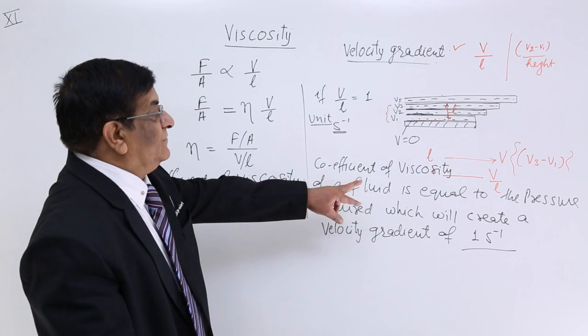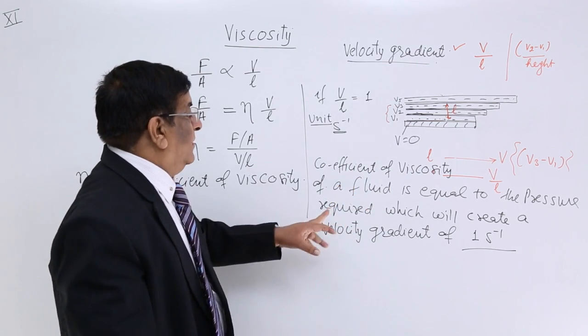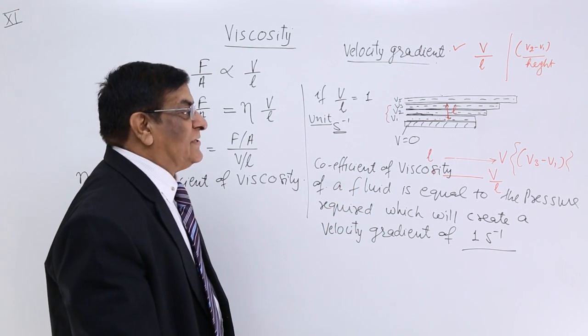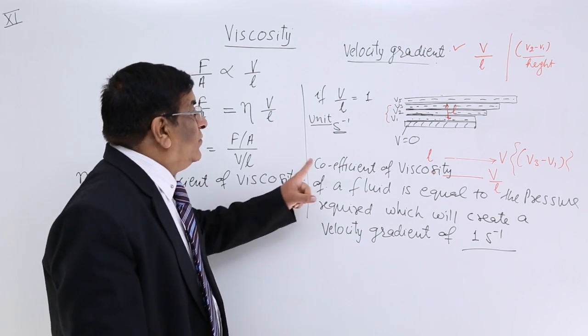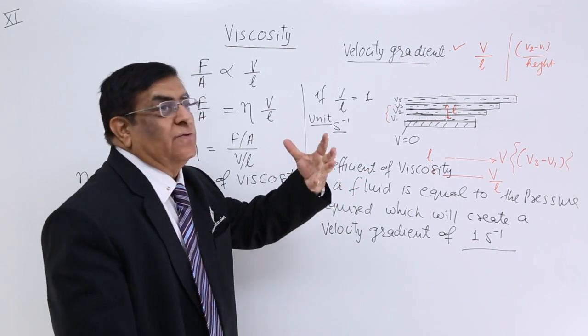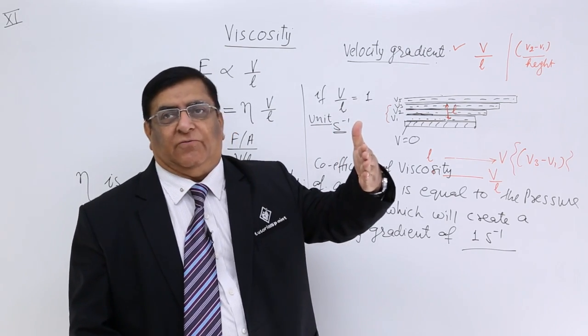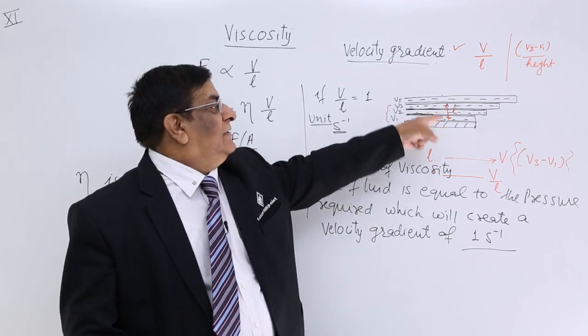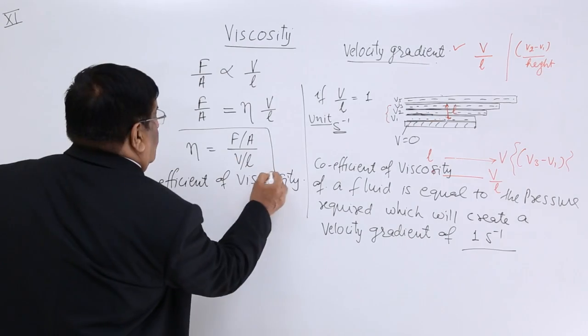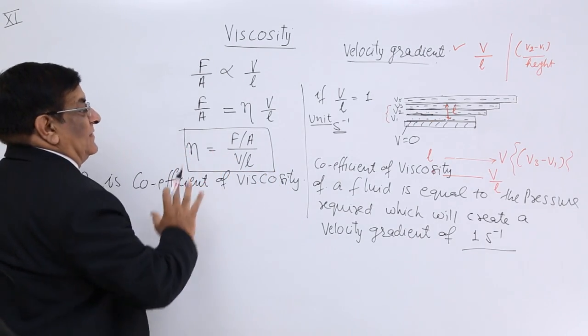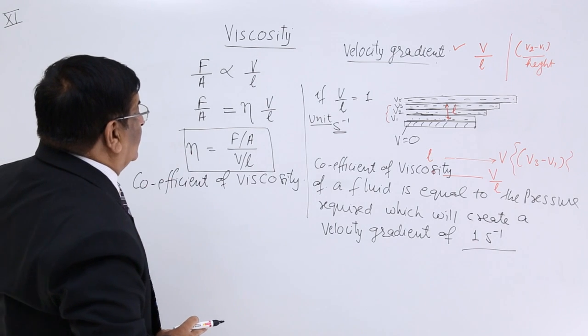This numerically, this is equal to the pressure required. What is pressure? Force per unit area. So viscosity coefficient is force per unit area of the liquid which will create this much. So please remember this one. Can we make the unit of this?